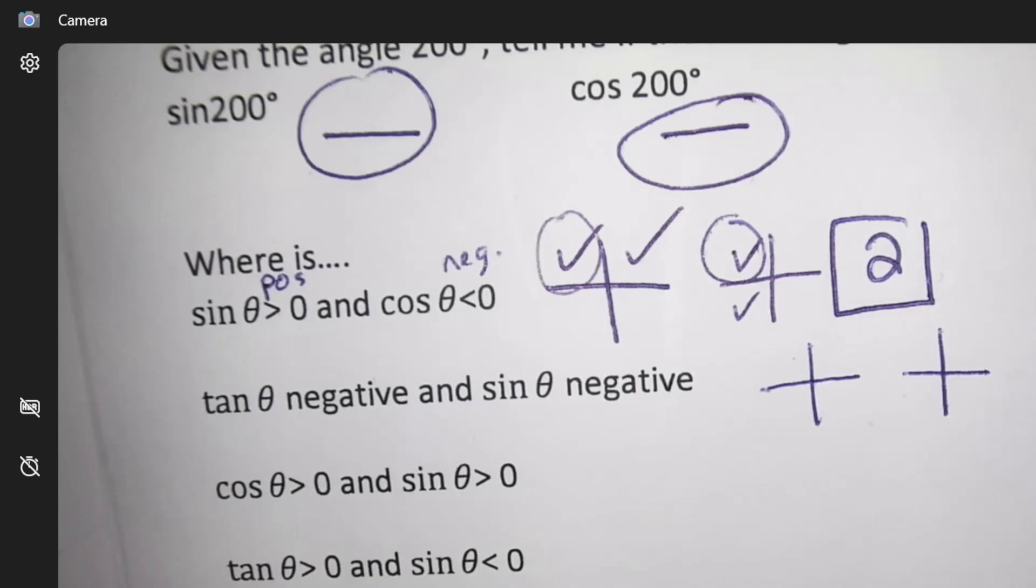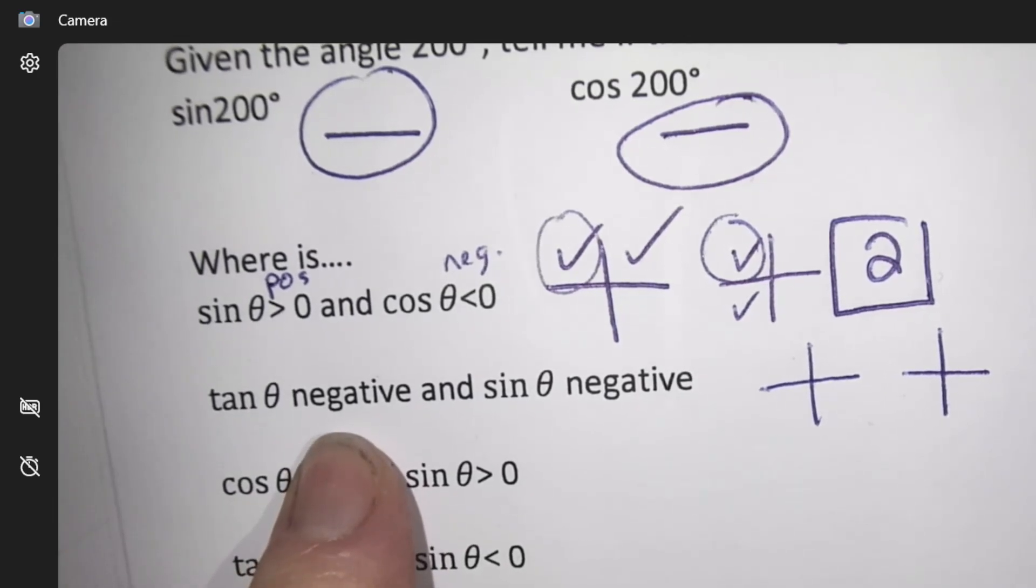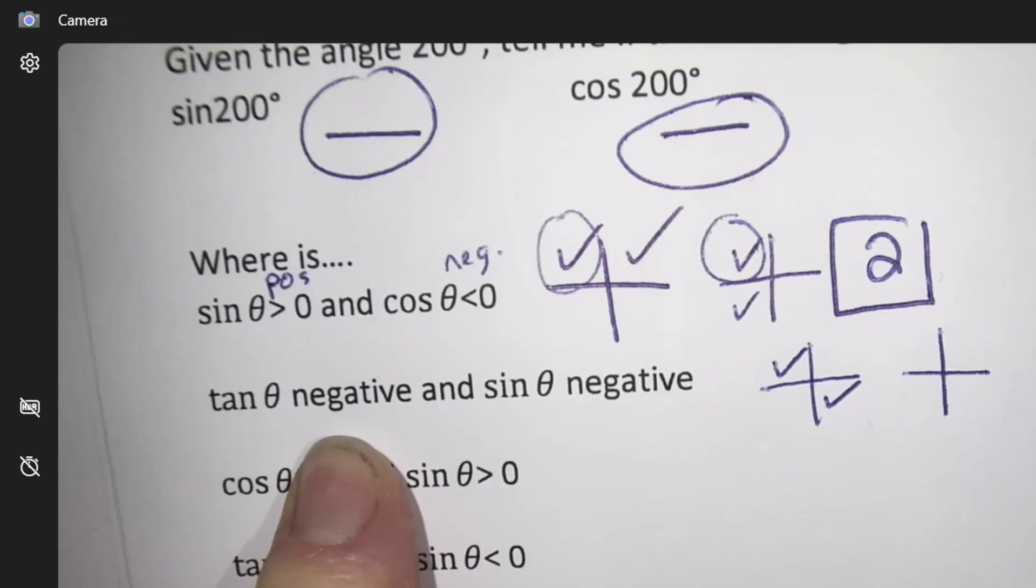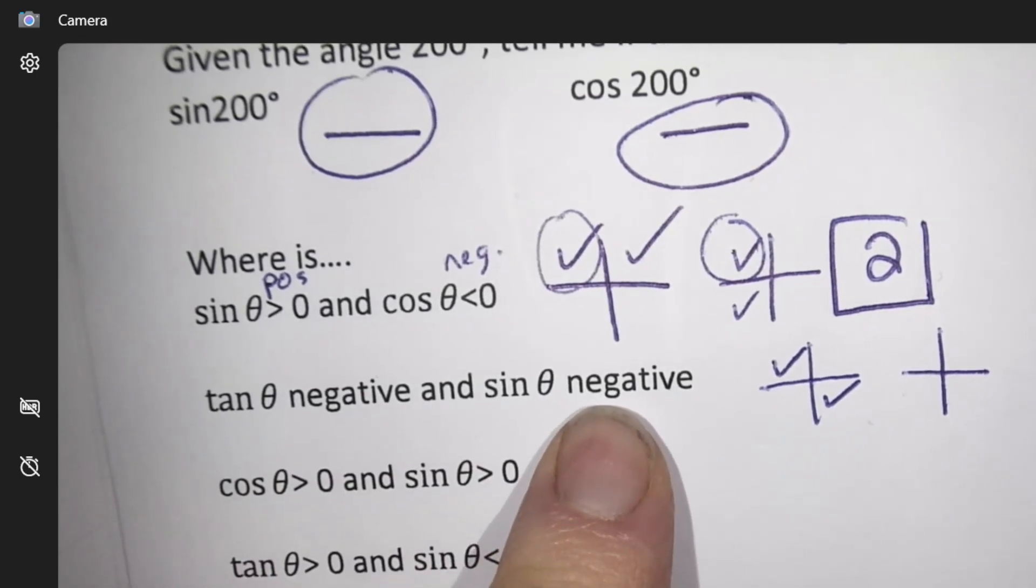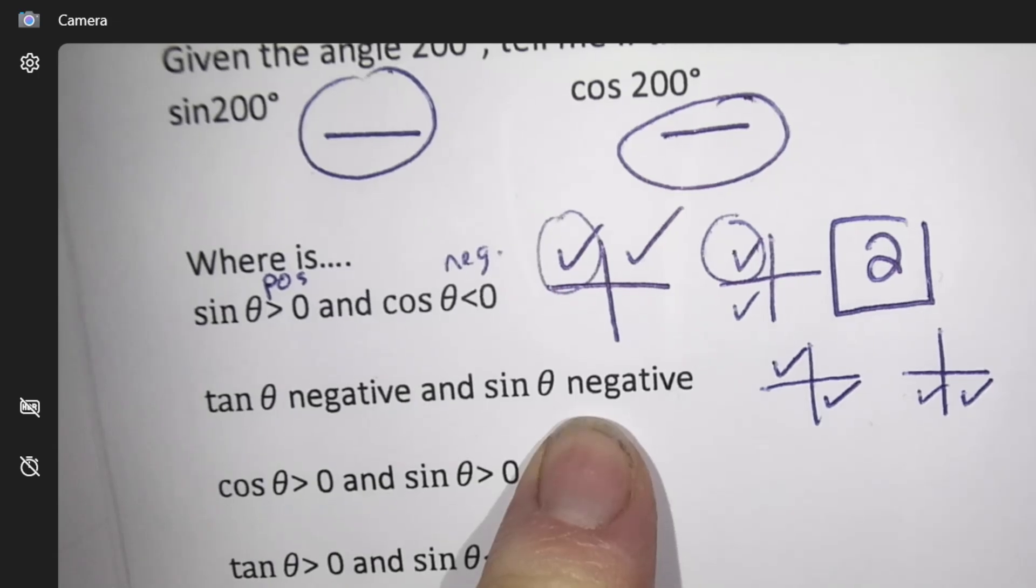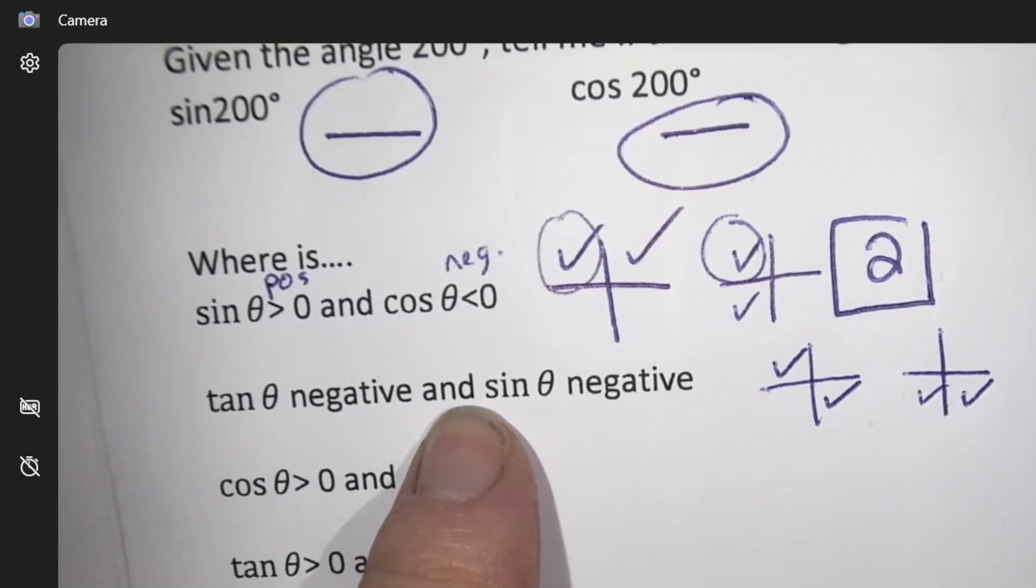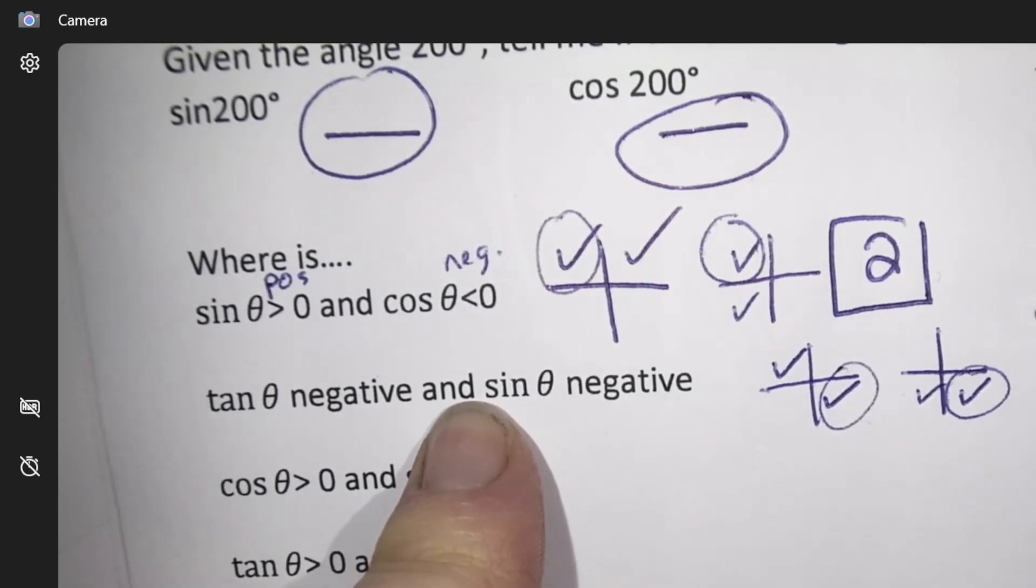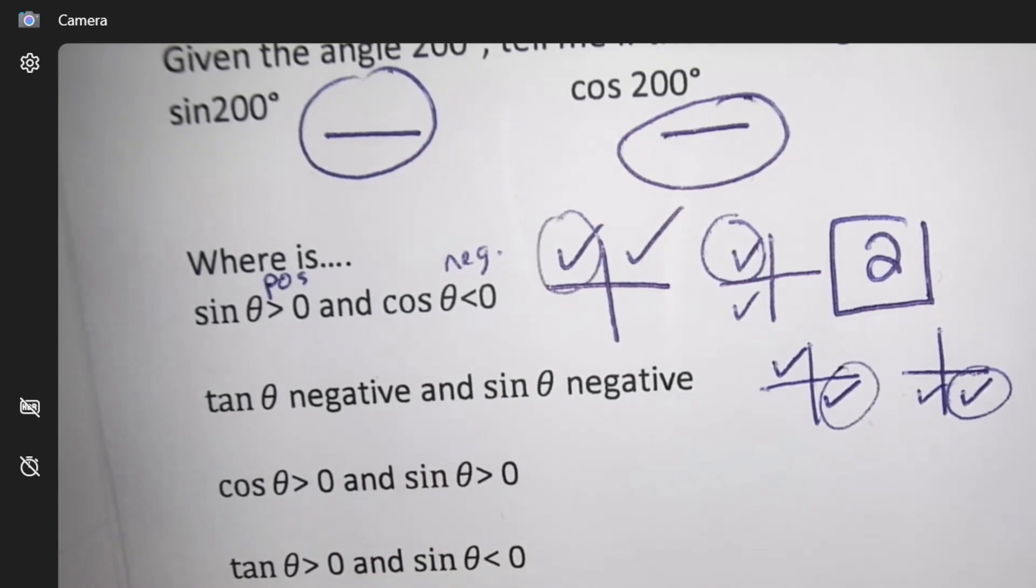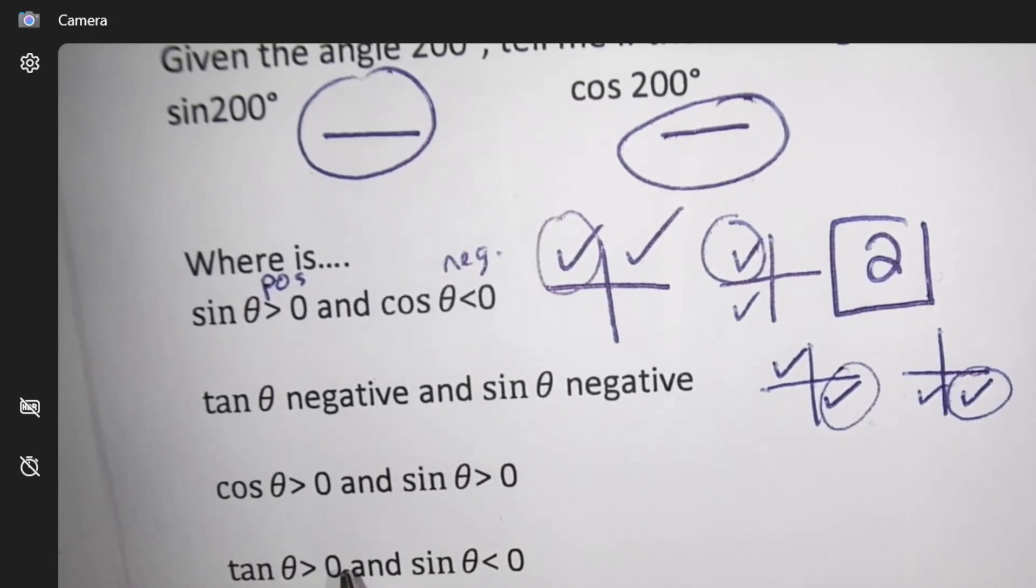So the next one. Tan is negative. So your tan is some kind of diagonal. So where is tan negative? Diagonal. Sin has to be negative. So sin is up, down, split. So where is sin negative? So where are they both? I'm picking quadrant 4.